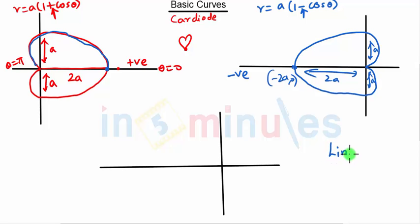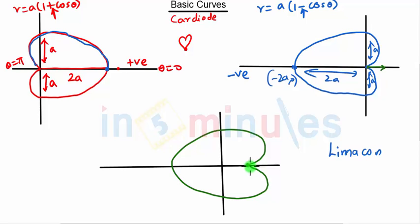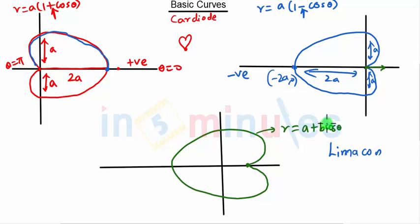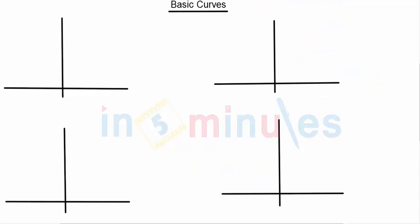After that, we have a curve similar to the cardioid, which is known as the limaçon. The limaçon curve is similar to the cardioid, but the tip is displaced on the positive side of the x-axis — it is not at the origin. The equation of the limaçon is r = a + b cos θ.